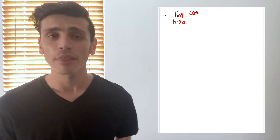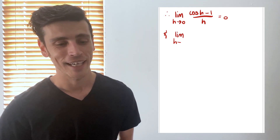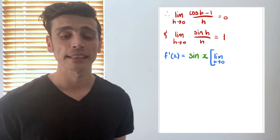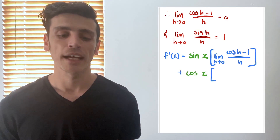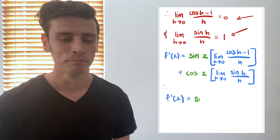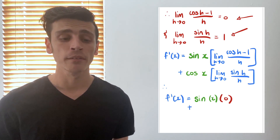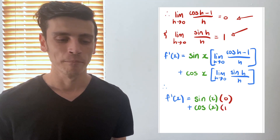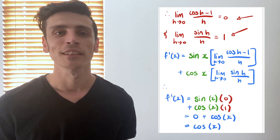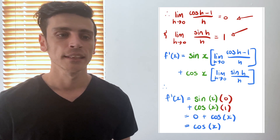So substituting these in: where we had the limit of (cos(h)−1)/h we substitute 0, and where we had the limit of sine(h)/h we substitute 1. Our equation now reads: sine(x)·0 plus cos(x)·1. Anything multiplied by 0 gives 0, and anything multiplied by 1 gives itself, so cos(x)·1 gives cos(x) and sine(x)·0 gives 0. This reads as 0 plus cos(x), which is just cos(x). We've shown that the derivative of sine(x) is in fact cos(x).